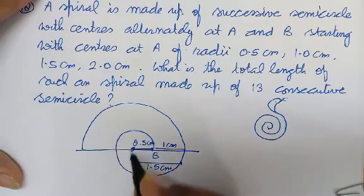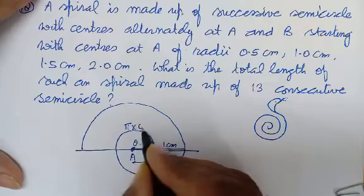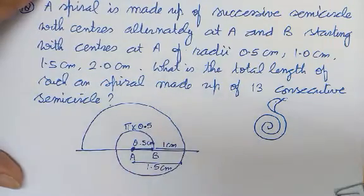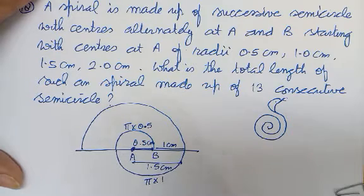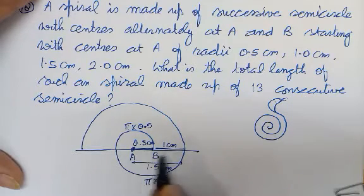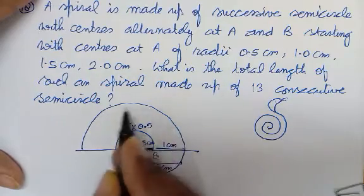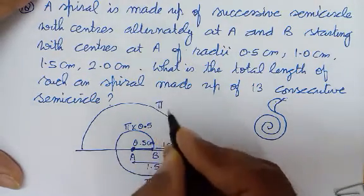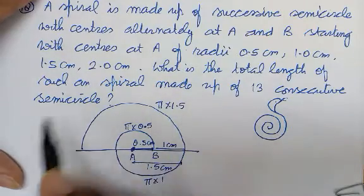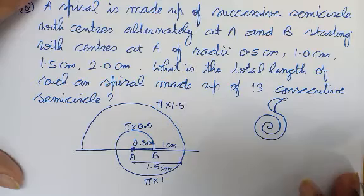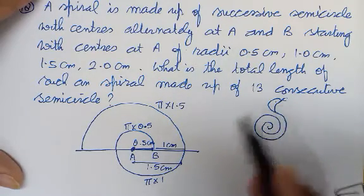To yeh jo pehla semicircle bana, woh pi r hota hai — π into 0.5, itna hua uski length. Ab jo doosra bana, usme aapne 1 cm le liya — π into 1 cm. Phir se aapne A pe rakh diya, to 1 cm aur 0.5 cm, yeh 1.5 cm ho gaya. To yeh jo 3rd semicircle bana hai, woh bhi π r hoga, lekin woh π into 1.5 hoga. Aise karke 13 consecutive semicircles ka hume addition karna hai.